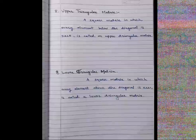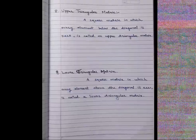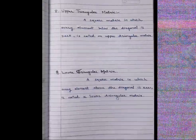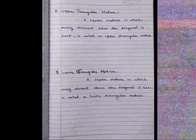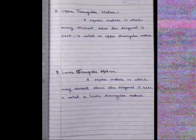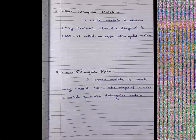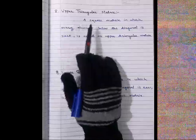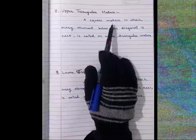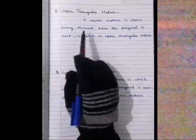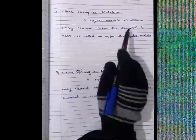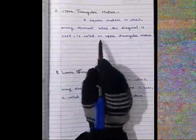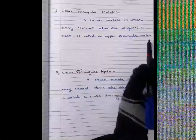Type number 8 is the upper triangular matrix and type number 9 is the lower triangular matrix. The definition of an upper triangular matrix: a square matrix in which every element below the diagonal is zero is called an upper triangular matrix.